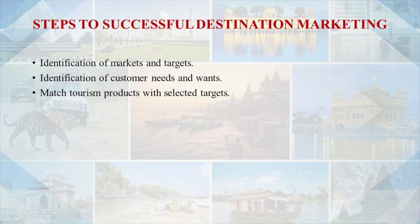The third step is to match tourism products with selected targets. See to it that if you have a good space for adventure tourism — river rafting or mountain climbing — your selected targets match that. The fourth step is to study your competitors. Know their strategies, do a SWOT analysis, look at their strengths and weaknesses, and how they market and develop their products.